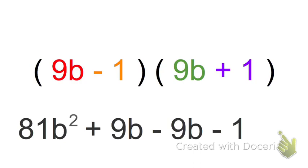The very last step is to combine any like terms. Now like terms have the same variable and exponent. So if I look at the first term, this has a b squared. Are there any other b squares? No. So there's nothing I can combine with 81b squared.